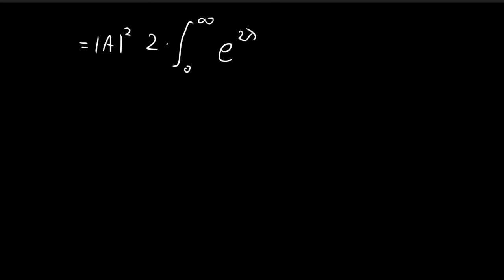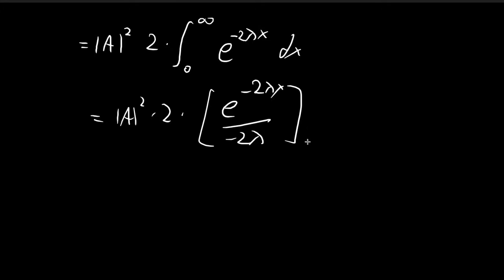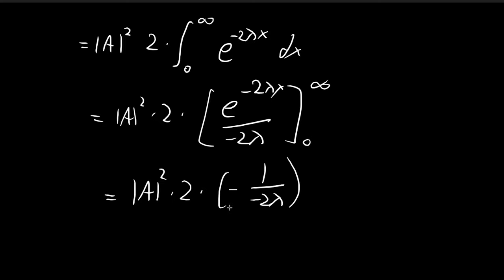The reason for doing this is because of the absolute value sign. Since we're now integrating from 0 to ∞, which is entirely in the positive region, we can drop the absolute value sign. Evaluating the integral: e^(−λx) / (−2λ) from 0 to ∞. Substituting ∞ gives 0, and substituting 0 gives 1, so we get −1/(−2λ). In the end, |A|² / λ = 1.